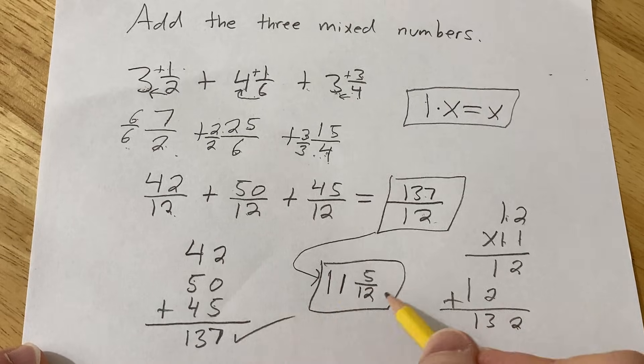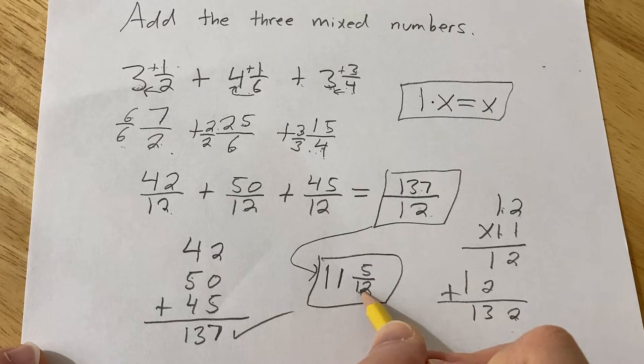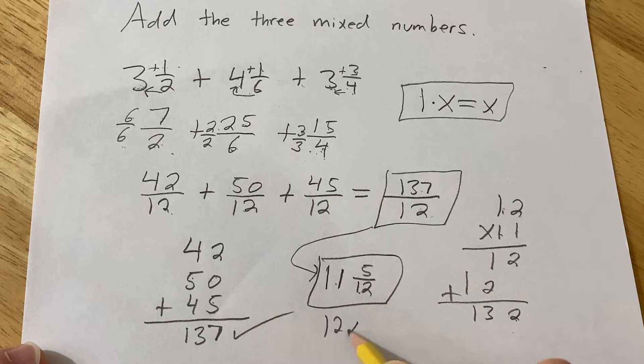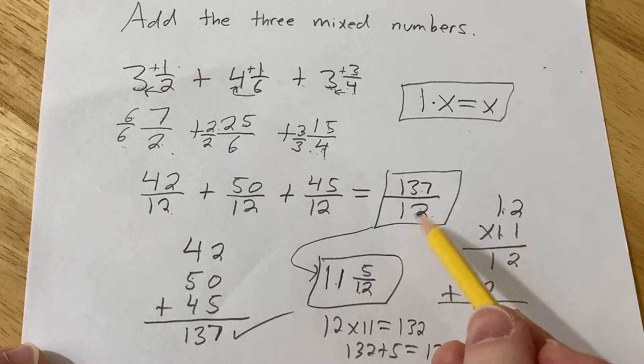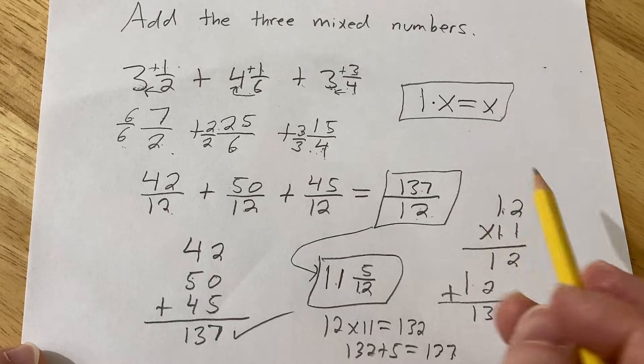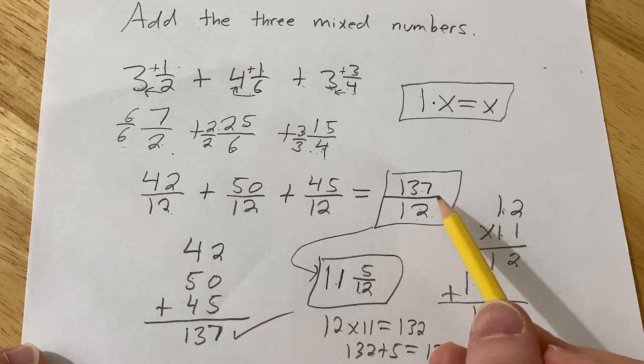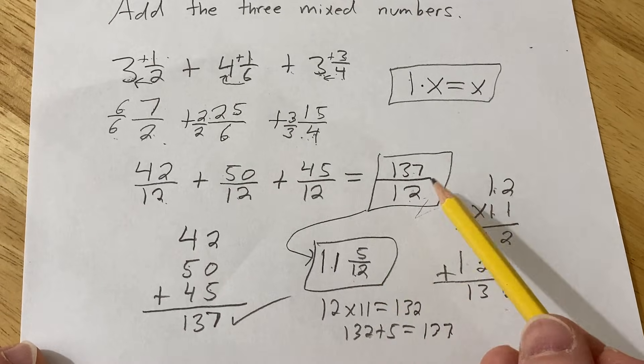You can check your answer manually by going backwards. 12 times 11 is 132, and then 132 plus 5 is equal to 137. So 5 is basically the remainder. So 12 goes into 137 11 times, and then you're left with 5. So 5 over 12. So this is called a mixed number, and this is called an improper fraction.